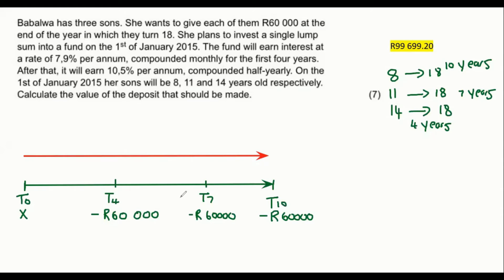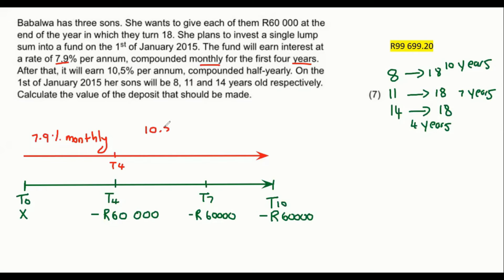The fund will earn an interest rate of 7.9% compounded monthly for the first four years, so up to T4 the interest rate is 7.9% monthly. Then it changes to 10.5% compounded half-yearly — some of you might call that semi-annually — and that applies all the way up to T10.